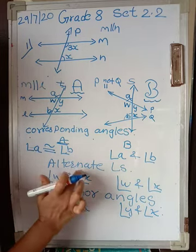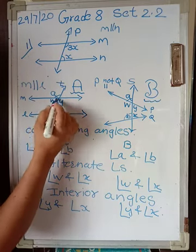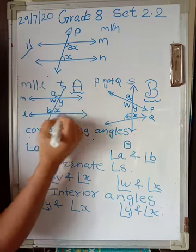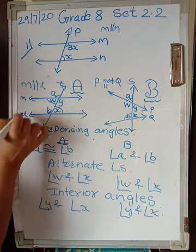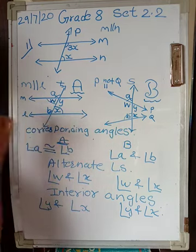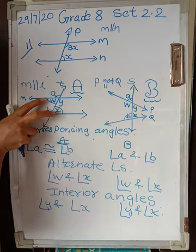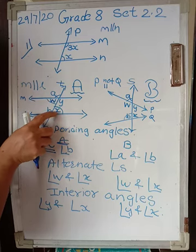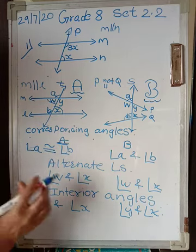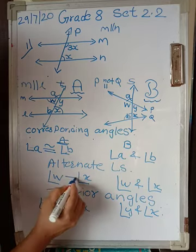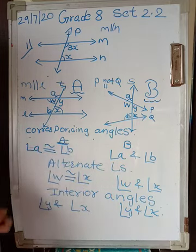This is true for alternate angles also. You can see alternate angles W and X — interior alternate. We have seen that they form a Z shape. These two angles will be equal if the lines are parallel and cut by a transversal. The pair of alternate angles will always be congruent — alternate angles will also be congruent in Case A, that is when lines are parallel.